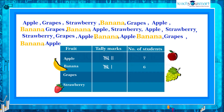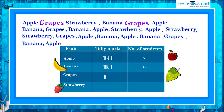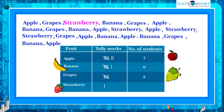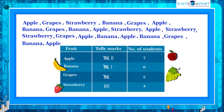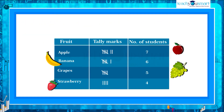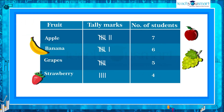Continuing in this manner, we can find the number of students who like grapes: one, two, three, four, five. And strawberry: one, two, three, four. The number of tallies for each fruit gives the number of students who like that particular subject. This is known as the frequency of that fruit.